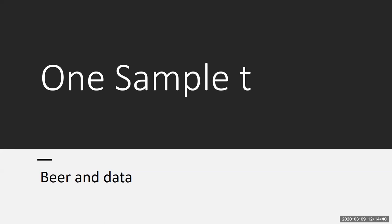We are now going to learn about something called a one-sample t. What's fun about this is that we're going to learn a little bit about how beer and statistics are related, and I'm going to use this example with beer to explain why the one-sample Z won't work for most instances of statistics.